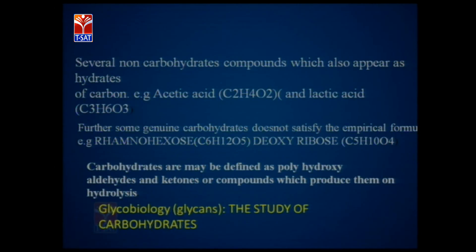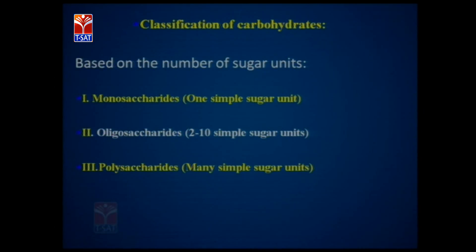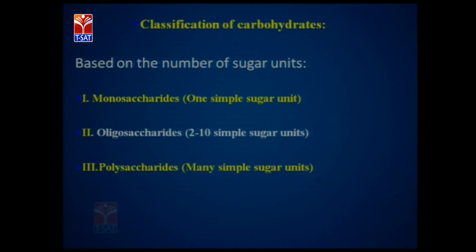Glycobiology is generally considered the study of carbohydrates. Coming to our major topic, classification of carbohydrates: carbohydrates are divided into three major groups based on the number of sugar units. These are monosaccharides, oligosaccharides, and polysaccharides. Monosaccharides are simple sugars having one sugar unit. Oligosaccharides typically have two to ten simple sugar units. Polysaccharides have many sugar units.